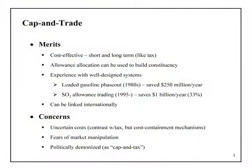Cap and trade takes the opposite approach, but it's completely parallel. The quantities of CO2, or more likely of carbon coming into the economy, are constrained by allowances, and the allowances are permitted to be traded.